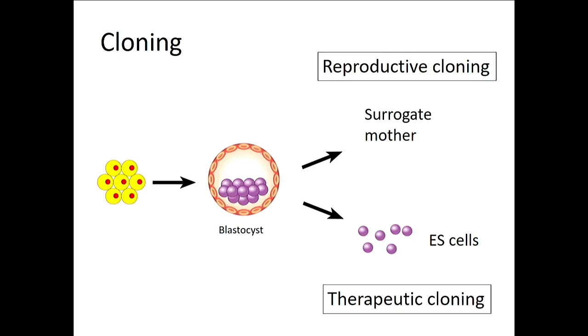Now the other thing you can do once you have this blastocyst is you can remove these purple cells, very potent cells, and you can grow them. We can grow them in the lab. These purple cells are similar, but not identical, similar to the iPS cells which I showed you earlier. So you can use them for therapeutic purposes. You can differentiate them again into any cell type that you want.